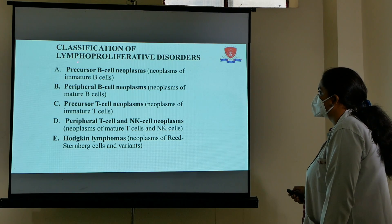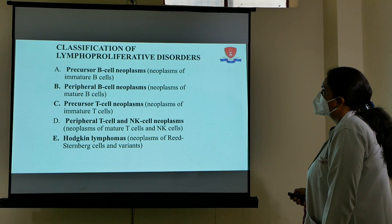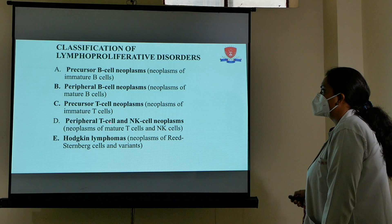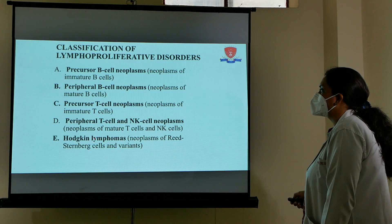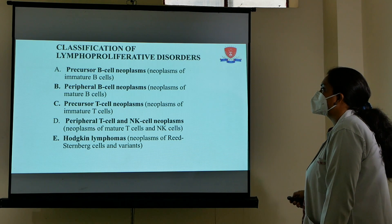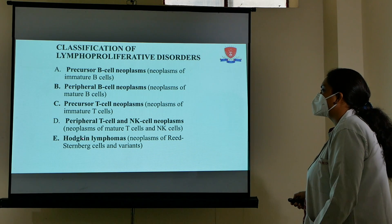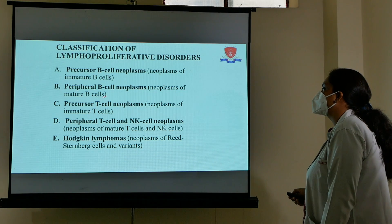This is the newer WHO classification. You must remember these five entities: precursor B cell neoplasms, peripheral B cell neoplasms, precursor T cell neoplasms, peripheral T cell and NK cell neoplasms, and Hodgkin's lymphoma. The first four categories come under non-Hodgkin's lymphoma, and Hodgkin's lymphoma is classified separately.